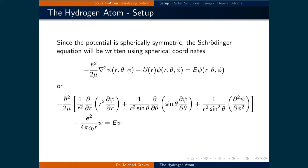Therefore, the Schrödinger equation reads: negative h-bar squared over 2 times mu, times 1 over r squared d/dr applied to r squared d-psi/dr, plus 1 over r squared sine theta d/d-theta applied to sine theta d-psi/d-theta, plus 1 over r squared sine squared theta d squared psi/d-phi squared, minus e squared over 4 pi epsilon naught r times psi, set equal to E times psi.